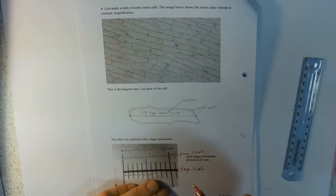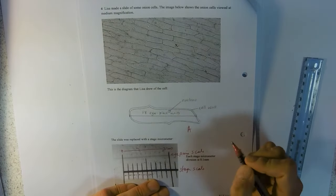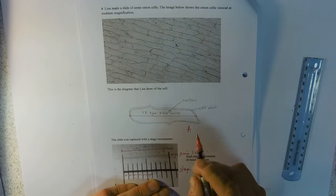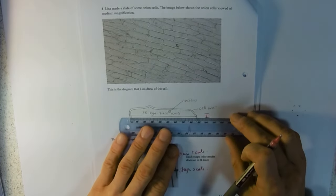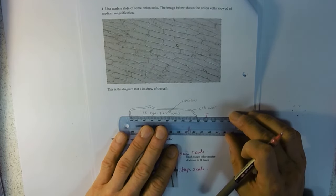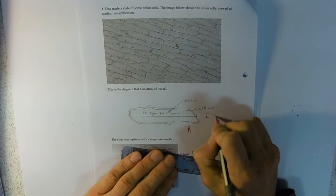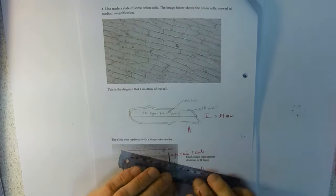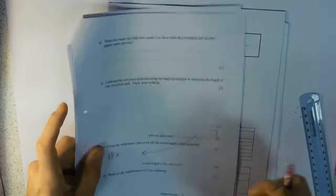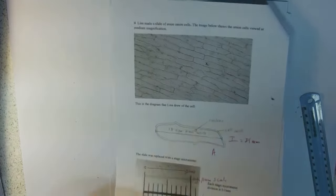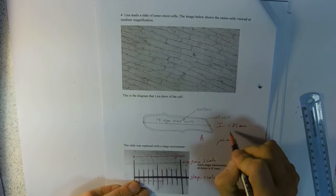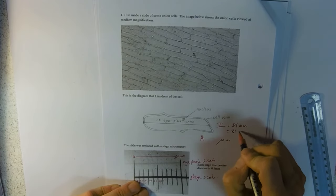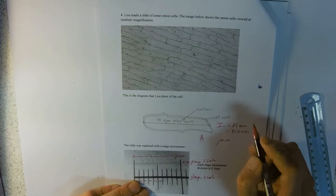Well we know the actual size now and we know the image size because we can just measure it. So we can measure the image size there and I get 81 millimeters. We've got the actual size, and we had that in micrometers.